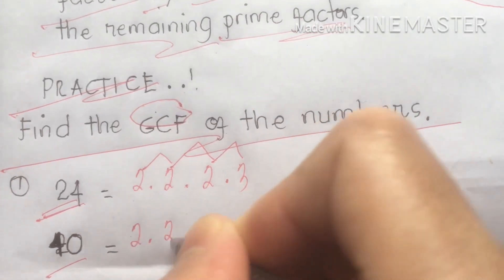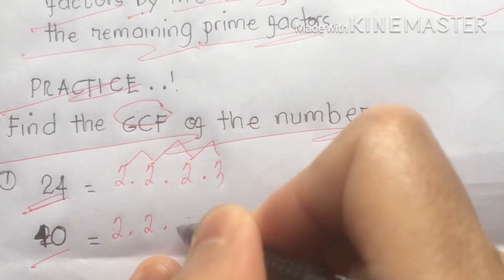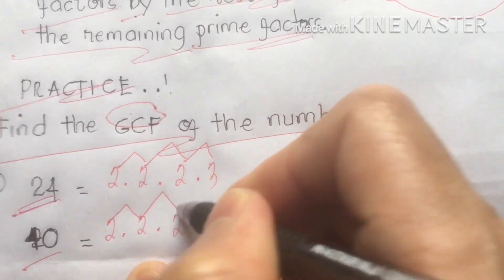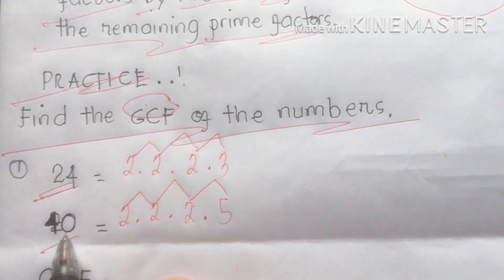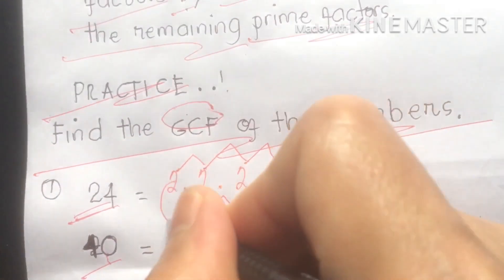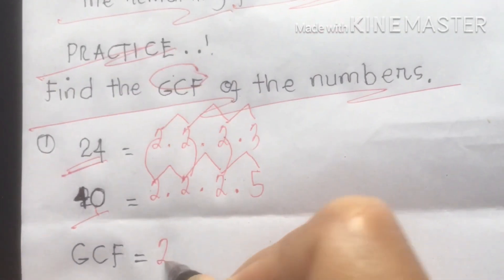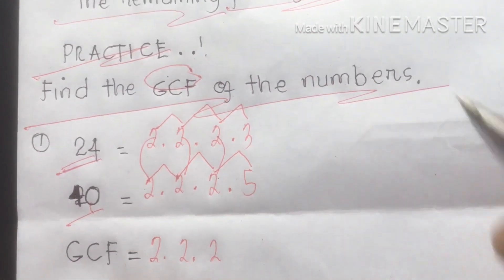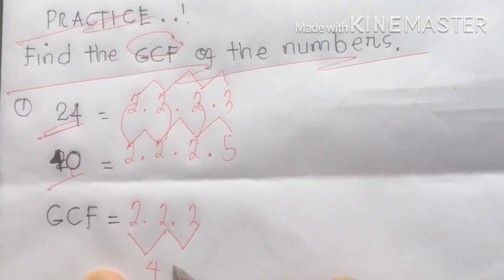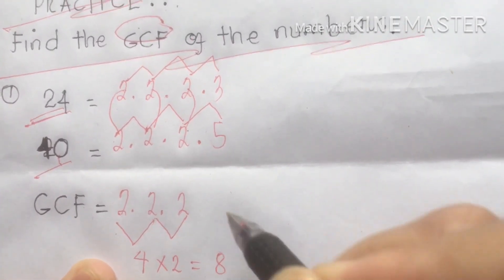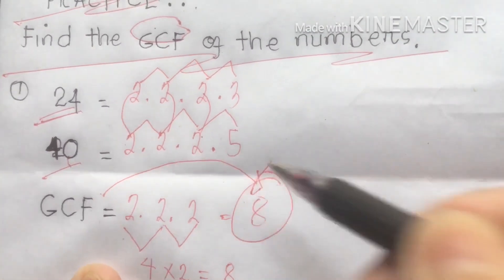For 40: 2 × 2 × 2 × 5 — two times two is four, times two is eight, times five gives us 40. Now let's find the common factors. We have three 2s in common, so we jot down 2 × 2 × 2, then multiply: 2 × 2 × 2 = 8. Eight is our GCF.